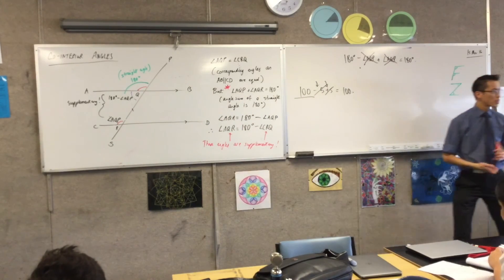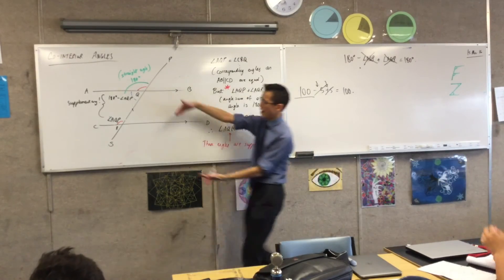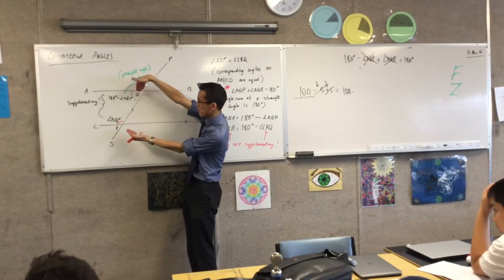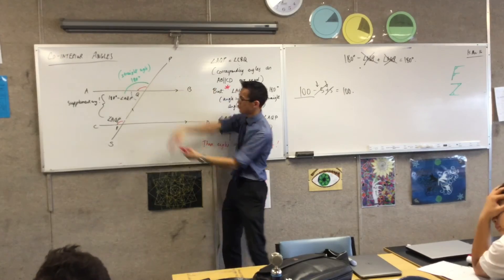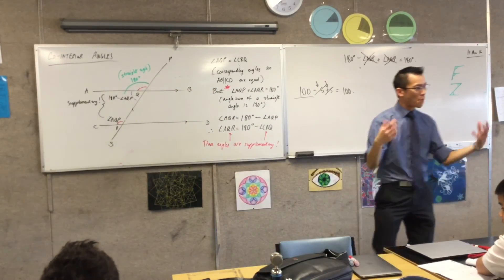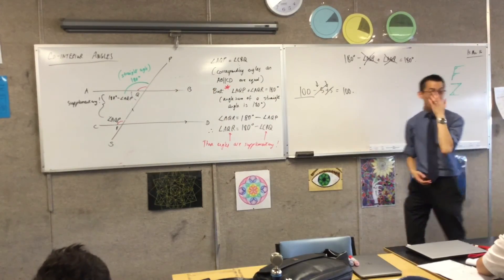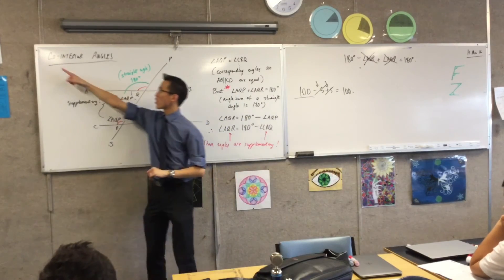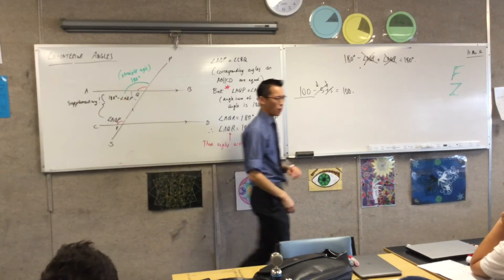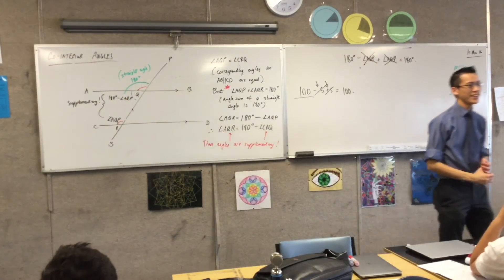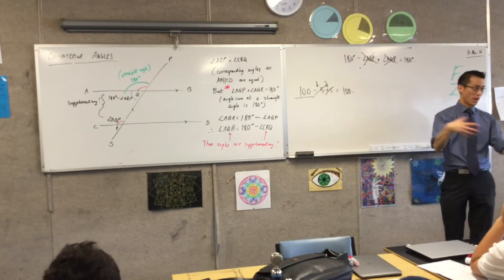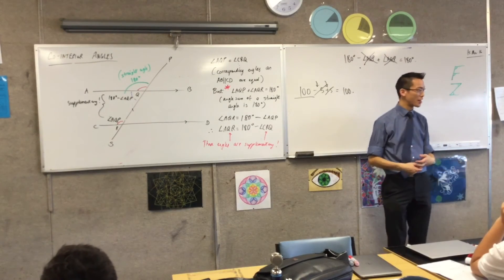These two angles that are both on the inside, right? Do you see how they're both on the inside of parallel lines? I guess I've got another pair over here, right? Because they are both inside, we call them co-interior.